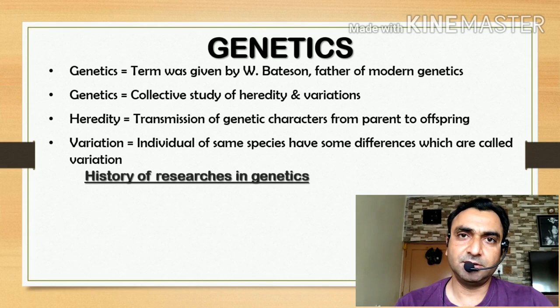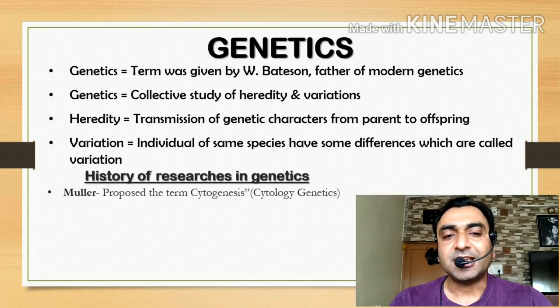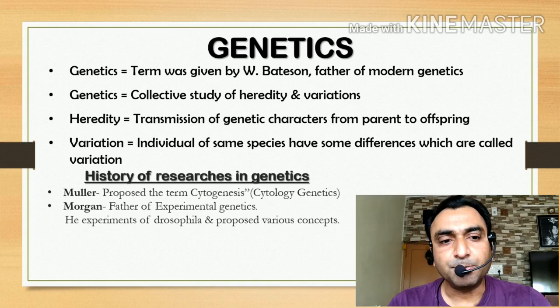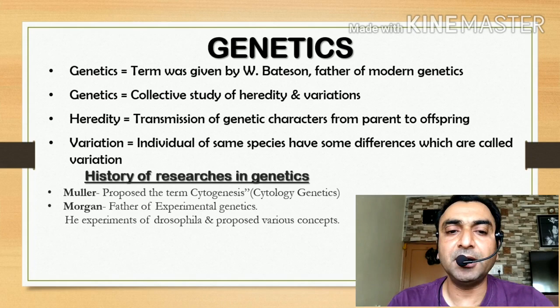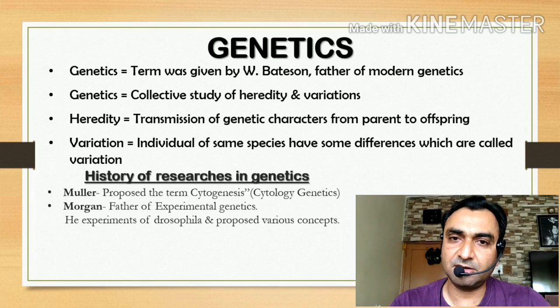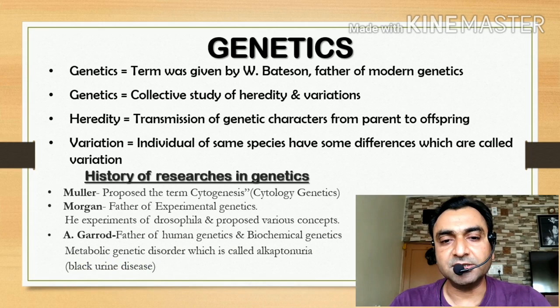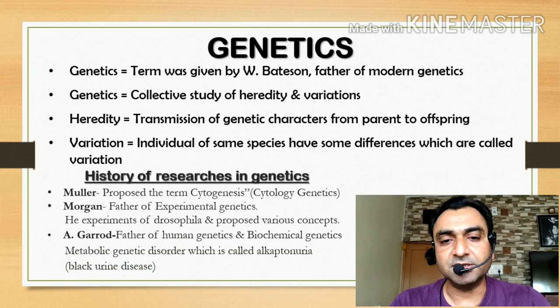Regarding the historical background of genetics research: the term cytogenetics was proposed by Muller, known as cytological genetics. Morgan is known as the father of experimental genetics, and his experiments were on Drosophila. Next is Gerard, the father of human genetics and biochemical genetics — the metabolic genetic disorder alcaptonuria, also known as black urine disease, was proposed by Gerard. The term genetics was first given by W. Bateson, who is known as the father of modern genetics.